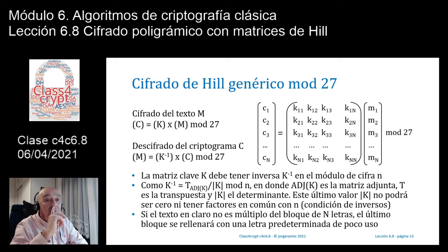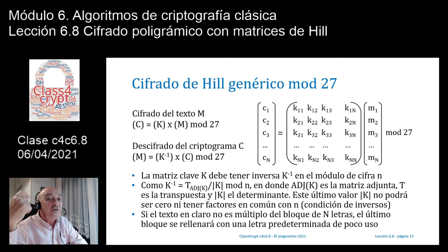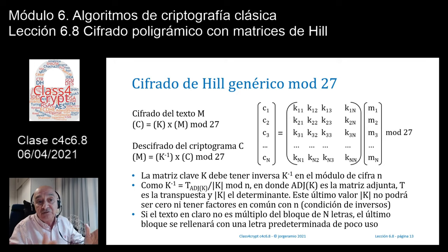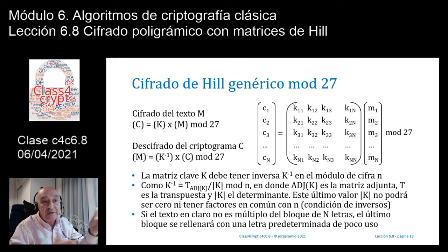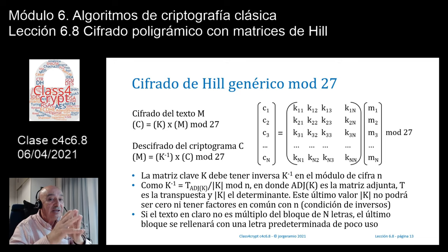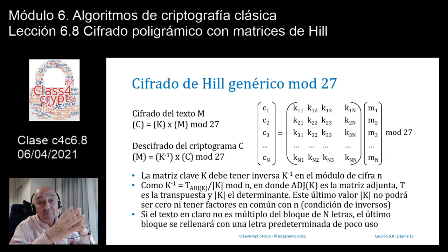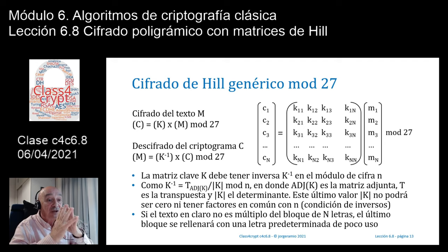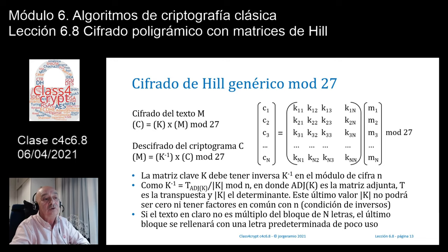Es muy importante que la matriz tenga esas dos características: que su determinante no valga 0 y que no tenga factores comunes con el módulo. Si hacemos cifras en un módulo que sea primo, por ejemplo módulo 29 con 27 letras más dos signos, las matrices serán casi todas válidas: solamente hay que eliminar aquellas cuyo determinante sea igual a 0, que son muy pocas, maximizando el número de matrices válidas.